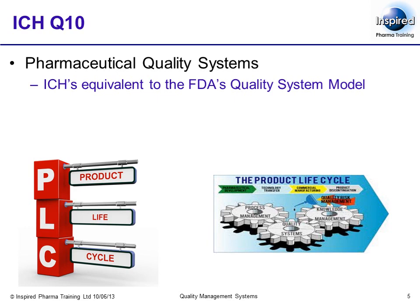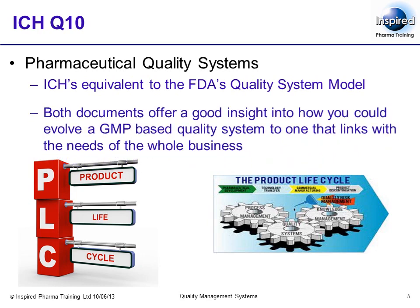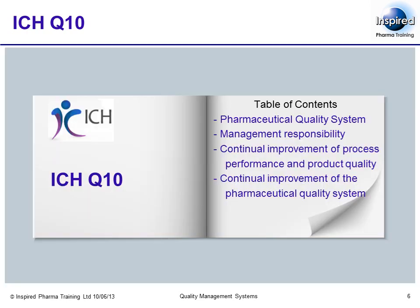Whilst the FDA's document may not be of direct relevance to you, especially if you do not supply the USA market, ICH Q10 is relevant as it has become a formal part of EU GMP. Both documents offer a good insight into how you could evolve a GMP-based quality system to one that links with the needs of the whole business. A cursory look at the document's table of contents will show a marked and immediate similarity to the principal themes associated with both the FDA model and the ISO-based system model.